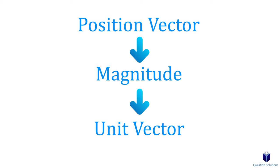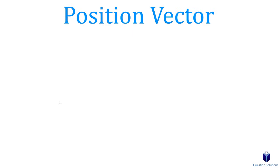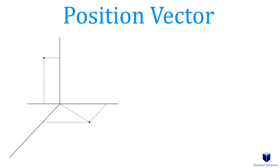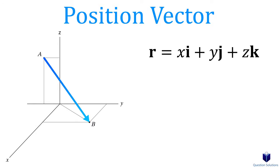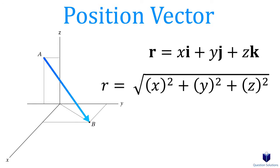To find the force in Cartesian form, we need to know a few things. First, a position vector — a position vector is simply a vector directed from one point to another. We represent position vectors using the letter r. We can find the magnitude of this position vector by taking each component, squaring it, and then taking the square root. Now if we divide each component of our position vector by the magnitude, the result is something called a unit vector.